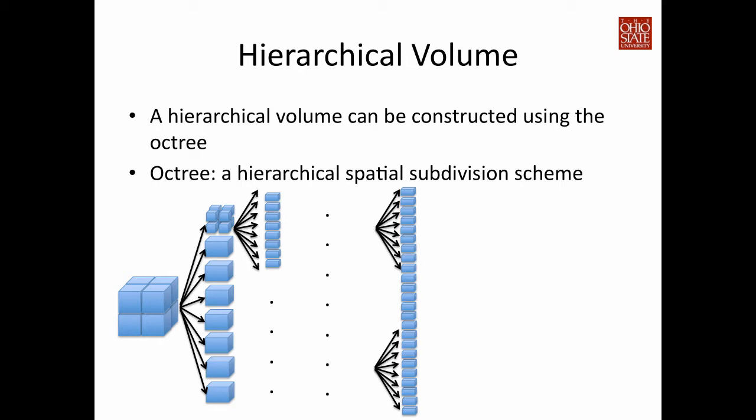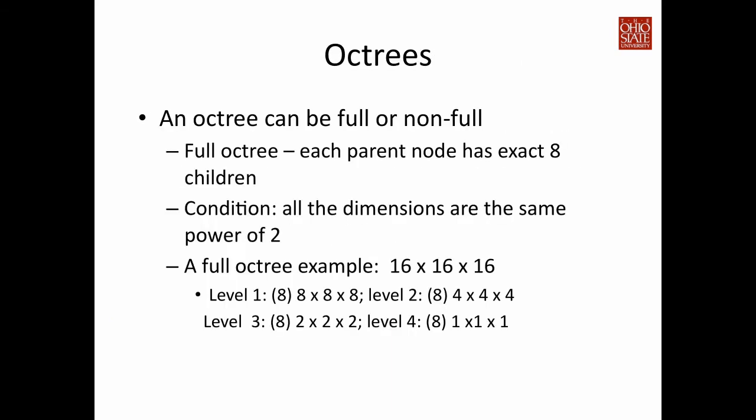The leaf nodes of an OctTree are the original raw data points, and the root of the whole tree is one single node representing the entire domain. Depending on how you subdivide it, an OctTree can be full or non-full. Full means every parent has exactly eight children — that is, each dimension has enough length to allow subdivision. Given a three-dimensional volumetric data represented as a 3D array, this means all dimensions have the same length and they are a power of two.